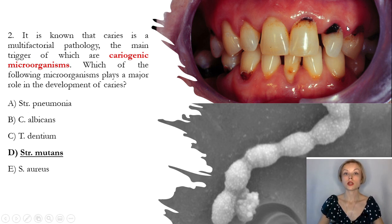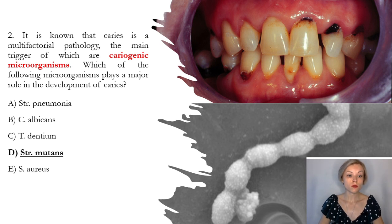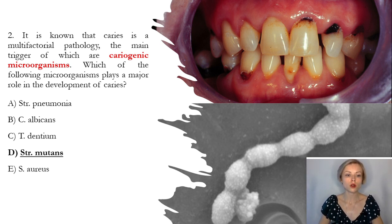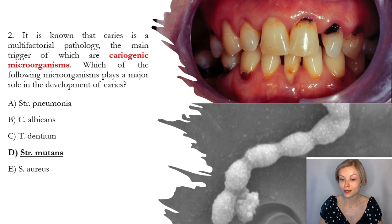Test number two. It is known that caries is a multifactorial pathology, the main trigger of which are cariogenic microorganisms. Which of the following microorganisms plays a major role in the development of caries? The correct answer is D, Streptococcus mutans.